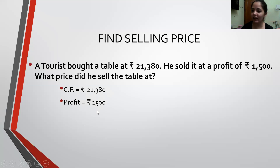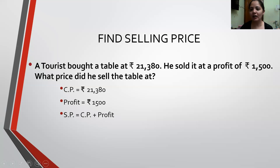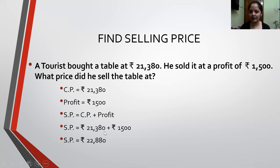It is Profit, which means Selling Price is more than the Cost Price. To find a bigger number when two smaller numbers are given, I add. So my Selling Price equals Cost Price plus Profit: Rs. 21,380 plus Rs. 1,500, giving an answer of Rs. 22,880.